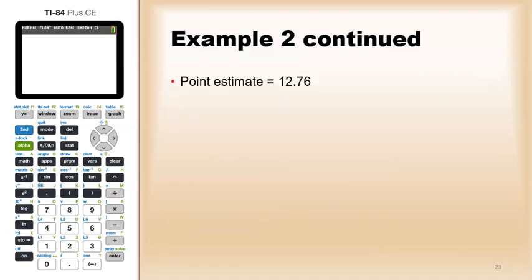Now, we were told the point estimate is 12.76, and the standard error you can find by taking the standard deviation divided by the square root of the sample size. In this case, it comes out to be 1.67.